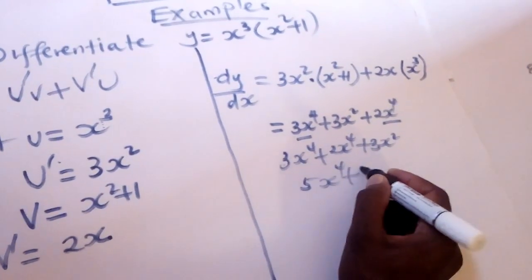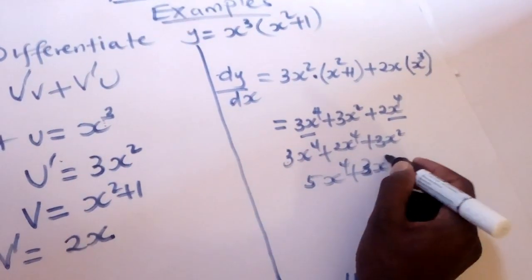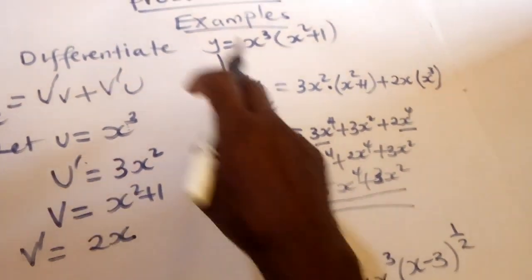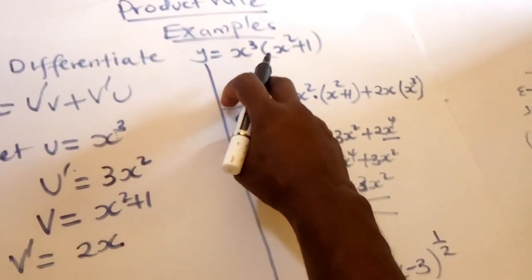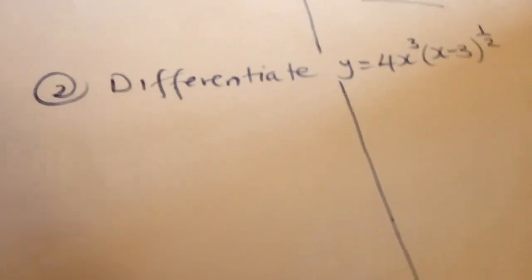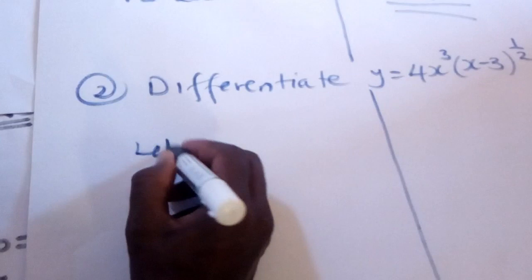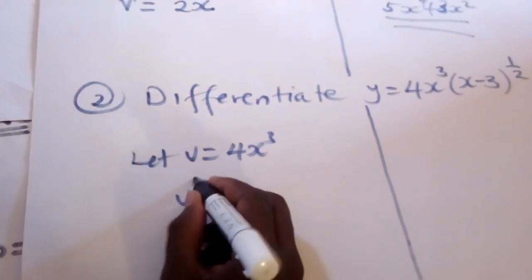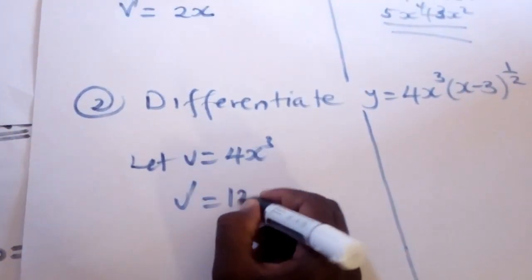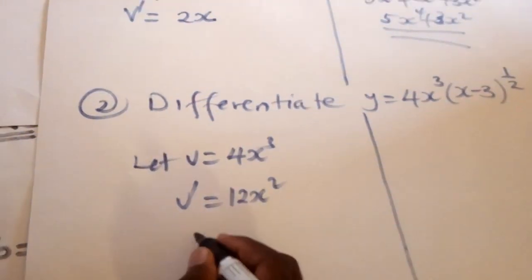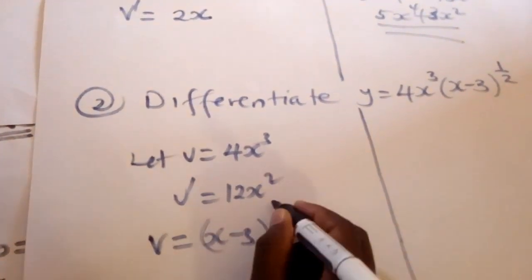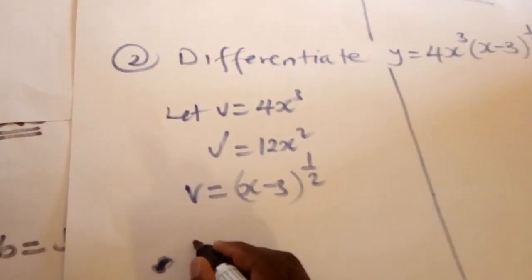Adding the like terms gives us the final derivative: 5x⁴ + 3x². That is the derivative of y = x³(x² + 1). For the next example, we again let u be the first function and find u̅, the derivative of u, which is 12x².